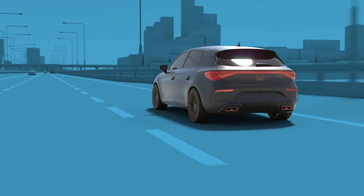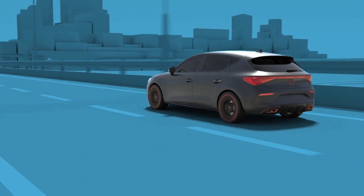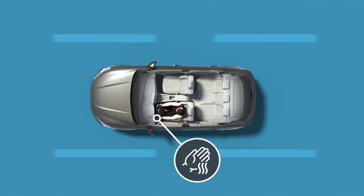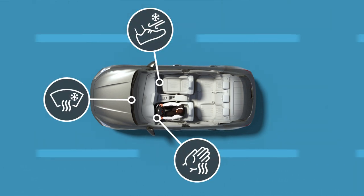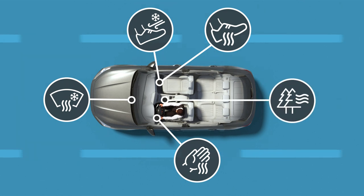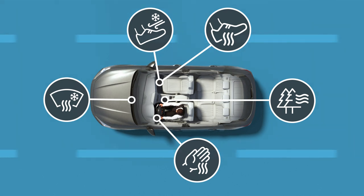iClimate. Features that automatically adjust the climate control for a certain time to instantly achieve warm hands, cool feet, defog windscreen, warm feet, or fresh air. Depending on the environmental conditions, there will be features that will not be offered — these will appear dimmed on the screen.